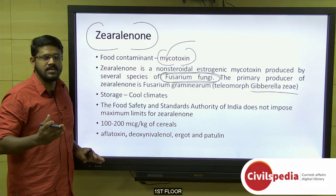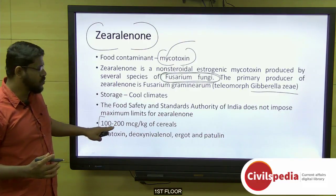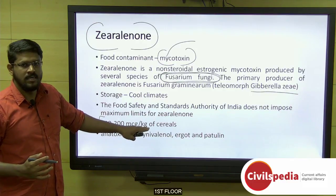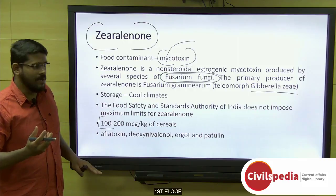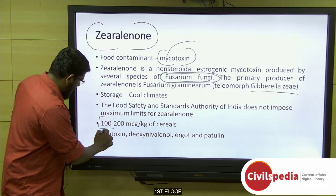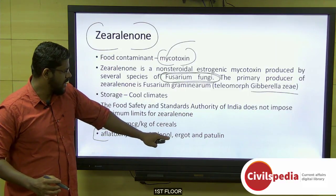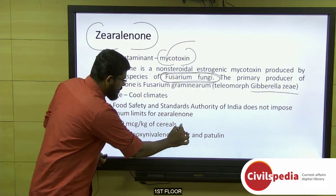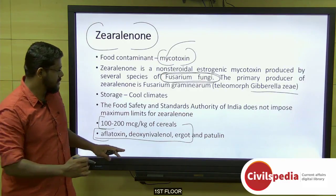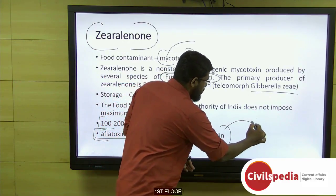According to the European Union and some other countries, certain limits have been prescribed in samples. The limit given by the European Union is 100 to 200 micrograms per kilogram of cereals. Some other mycotoxins or fungal toxins include aflatoxin, deoxynivalenol, ergot, and patulin. Aflatoxin, deoxynivalenol, and ergot are associated with cereals, while patulin is associated with apples.